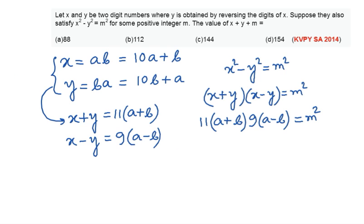Now the thing is that 9 is nothing but a perfect square. So 9 is a perfect square and the right hand side is also a perfect square.